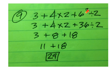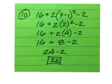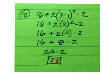Number 9: you have to square the 6 to get 36. Then go back and do 4 times 2, and 36 divided by 2 to get 8 and 18. 3 plus 8 is 11, plus 18 is 29. On number 10, we have 3 minus 1 to get 2. Squared is 4. Times 2 is 8. 16 plus 8 must be done first — that's 24. Then minus 2 is 22.